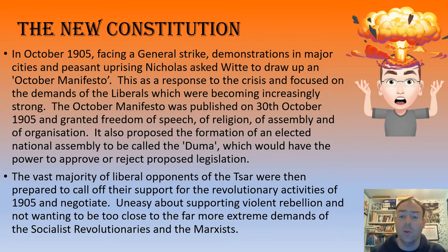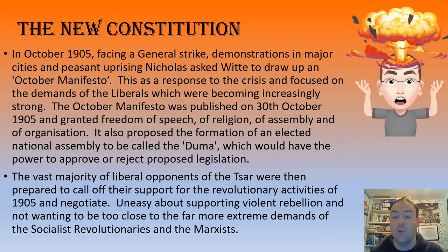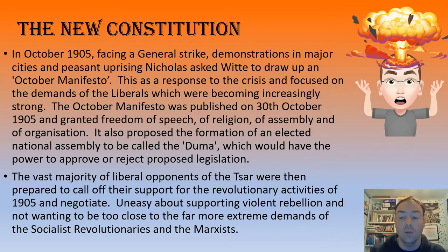The October Manifesto was published on the 30th of October 1905. It granted freedom of speech, freedom of religion, freedom of assembly and of organization - things like trade unions. It also proposed the formation of an elected national assembly called a Duma, which liberals had been calling for years, and they were ecstatic. This body would have the power to approve and reject proposed legislation, so it looked like it was going to have real teeth.